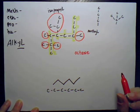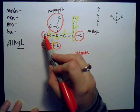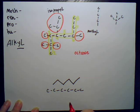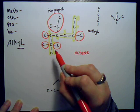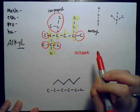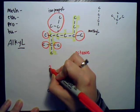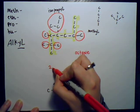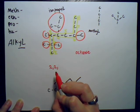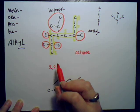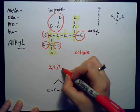Now we count how many methyl groups there are — we see there are four methyl groups. We write down the carbon numbers on which these methyl groups occur. Between numbers you write commas, and between numbers and words you write dashes. So we have: two, two — then one on carbon three, and one on carbon six.